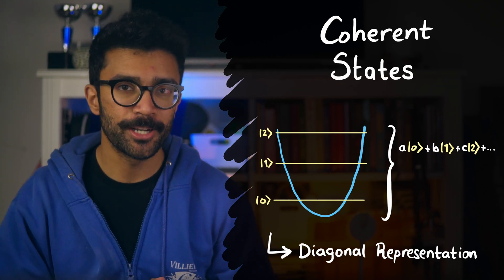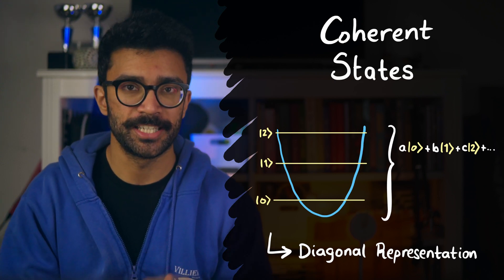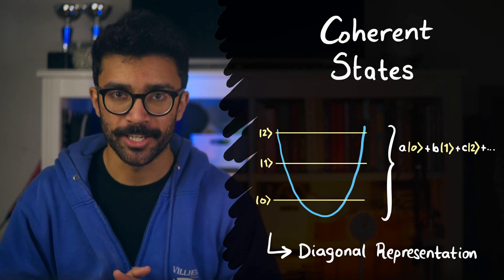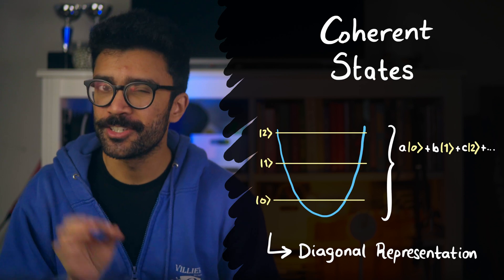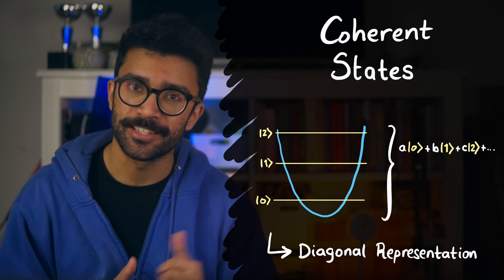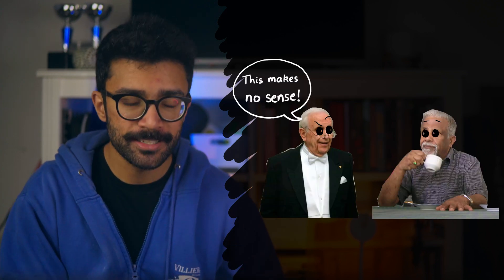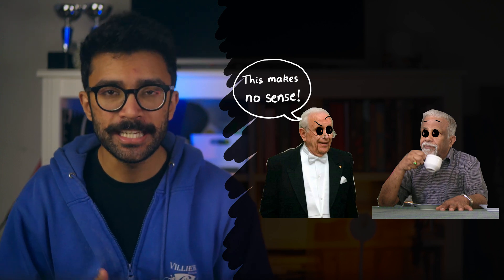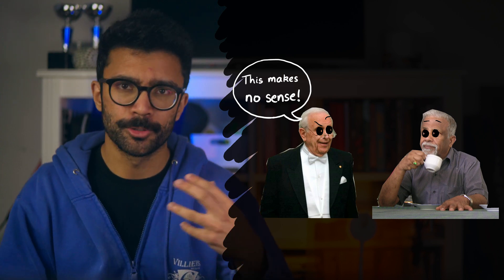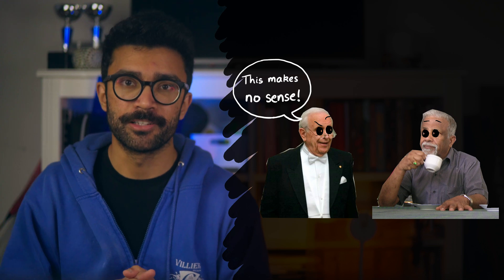Now, we'll understand coherent states and the diagonal representation in a bit more detail later in this video. If you just want to head over straight to the juicy physics-y deets, then head to this timestamp here. Here's an interesting thing though: Roy Glauber initially criticized George on his use of classical electromagnetism within this quantum idea, and therefore George's overall diagonal representation of coherent states.